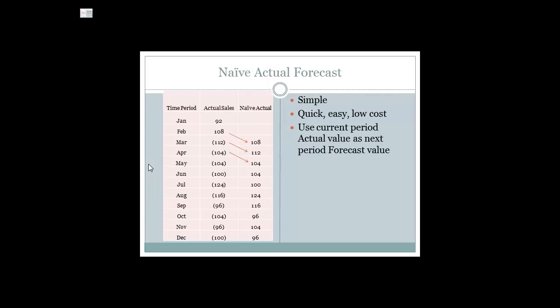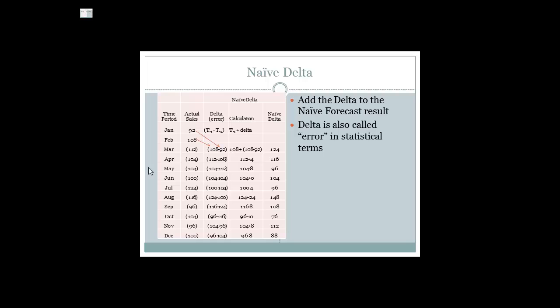Our naive actual forecast simply assumes the next period forecast will be the same as the period that just happened. The naive delta forecast includes the delta, or difference, between the two previous actual periods. It improves the forecast for data moving in a linear fashion.